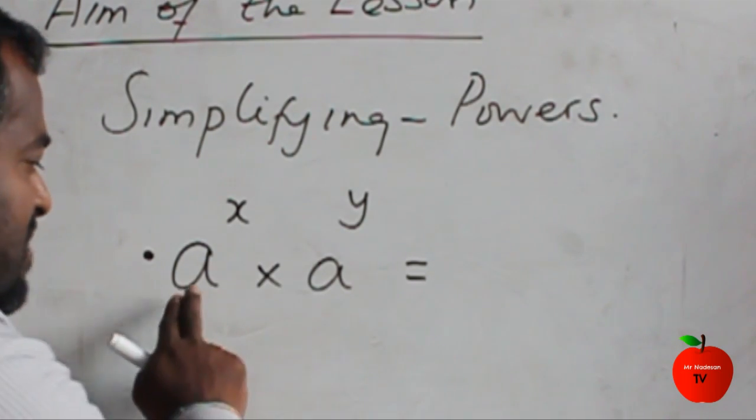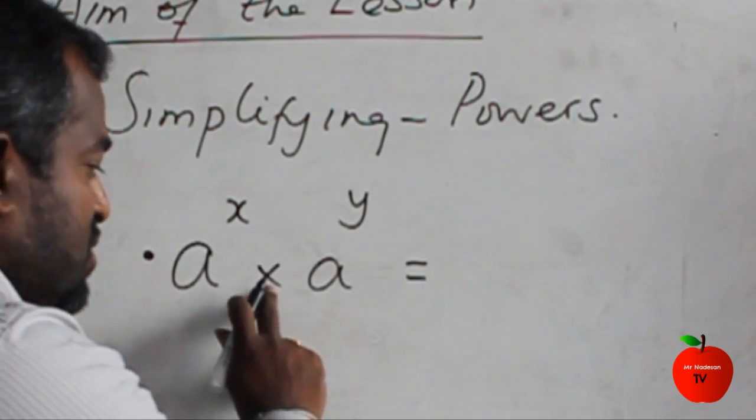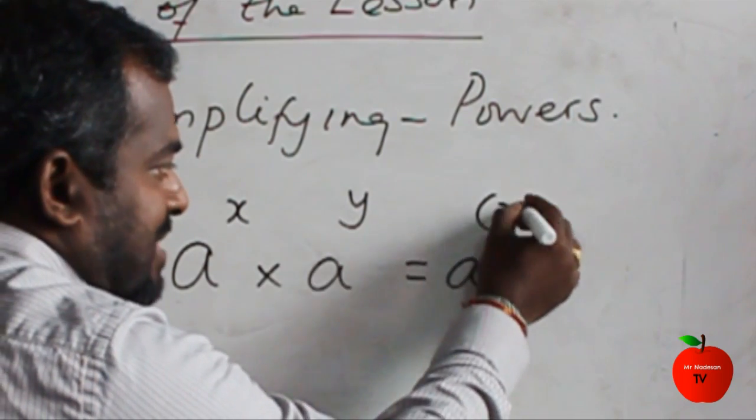y is the power. When the base is equal and you multiply, you have to add the powers together.